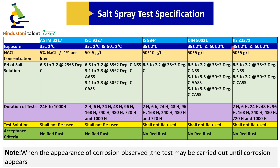In the case of JIS Z2371, if the testing method is NSS, the pH of the salt solution shall be 6.5 to 7.2 at a temperature of 35 plus or minus 2 degrees centigrade. In the DIN 50021 standard, the duration of testing is not defined, so you need to follow the customer requirement or the design requirement.